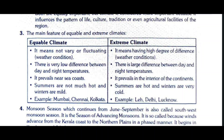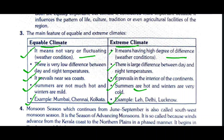Question three: What are the main features of equable and extreme climates? Equable climate means not very fluctuating weather conditions, with very low difference between day and night temperature. It prevails near sea coasts. Summers are not much hot and winters are mild. Examples: Mumbai, Chennai, Kolkata. Extreme climate means having a high degree of difference in temperatures, with large difference between day and night temperature. It prevails in the interior of continents. Summers are hot and winters are very cold. Examples: Leh, Delhi, Lucknow.